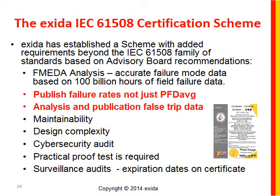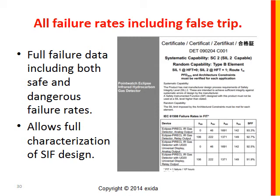In the Exeter certification scheme, we publish failure rates — not just PFD average — because there are many variables involved in calculating PFD average. We analyze and publish the full false trip data. You can see this on the back page of virtually every single Exeter certificate; our certificates are available on the Exeter website. We publish and require that manufacturers publish a full set of failure rate data including both safe and dangerous failure rates, because it allows you the designer to calculate your PFD average based on the variables in your plant, and to calculate the false trip rate, which is awfully important to most of us in the process industries.